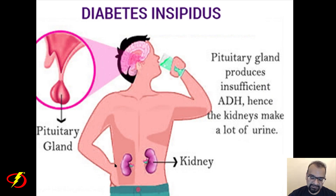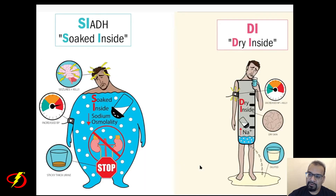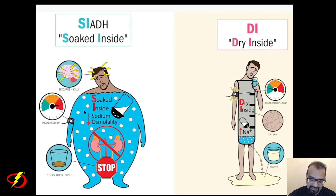In diabetes insipidus, the pituitary gland makes insufficient antidiuretic hormone, causing the kidneys to produce a large volume of urine. An easy memory aid: diabetes insipidus means 'dry inside.' The exact opposite is SIADH — the syndrome of inappropriate antidiuretic hormone — which involves too much ADH. DI means insufficient ADH; SIADH means too much ADH.